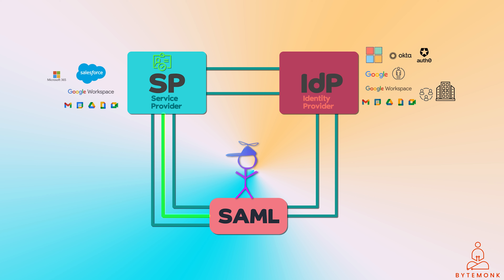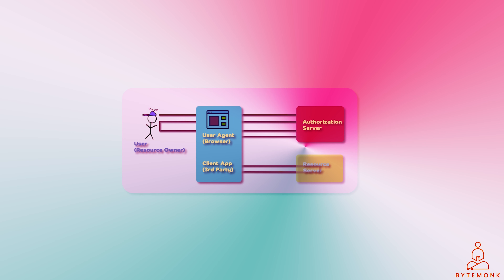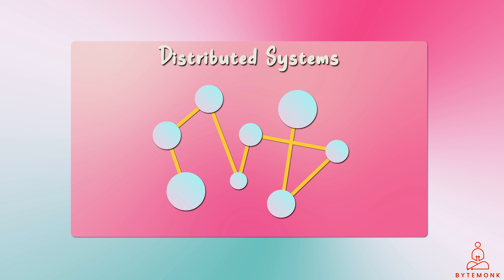OAuth 2.0 can also be used for authentication, but it's not its primary purpose. Extensions like OpenID Connect have been developed to add authentication capabilities to OAuth; however, OAuth alone doesn't inherently guarantee strong identity verification. OAuth is well-suited for scenarios where third-party applications need limited access to users' data without full control over identity. OAuth 2.0 with JWT has gained significant adoption in modern microservices architecture, where one service may need to access another service's API.